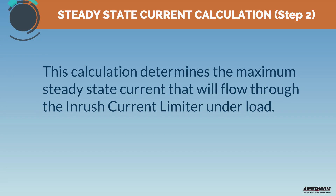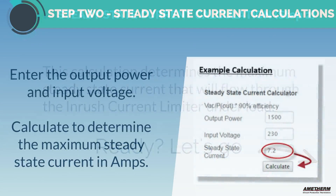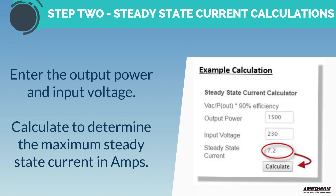Step 2: Calculating the steady state current. This calculation determines the maximum amount of steady state current that will flow through the inrush current limiter under load. Enter the output power and the input voltage, then calculate to determine the steady state current in amps. In this scenario, it is 7.2 amps.